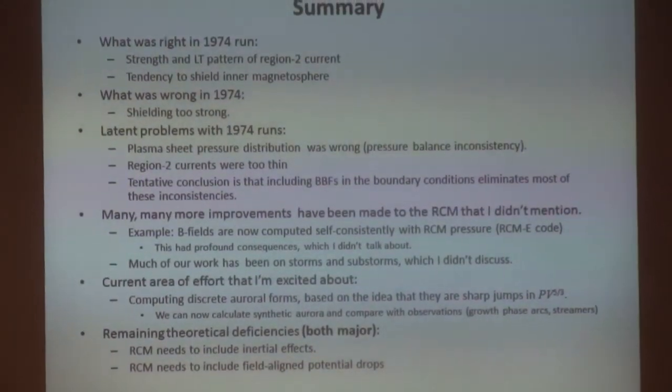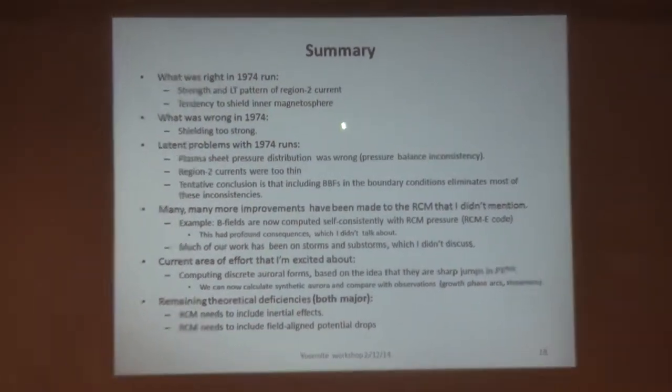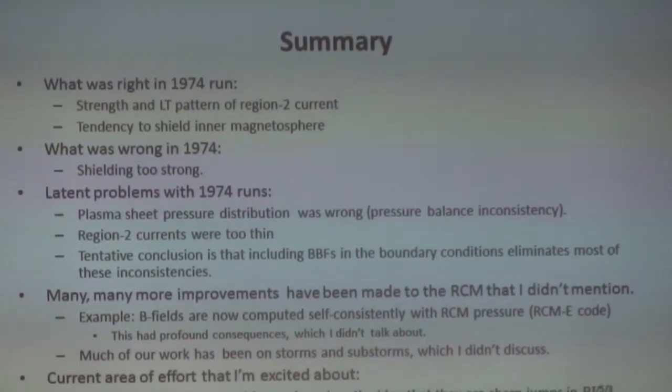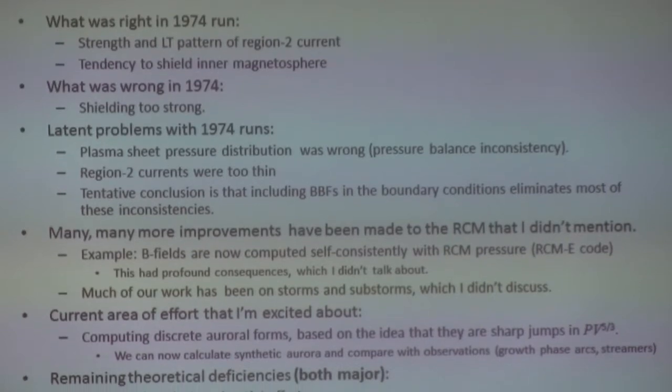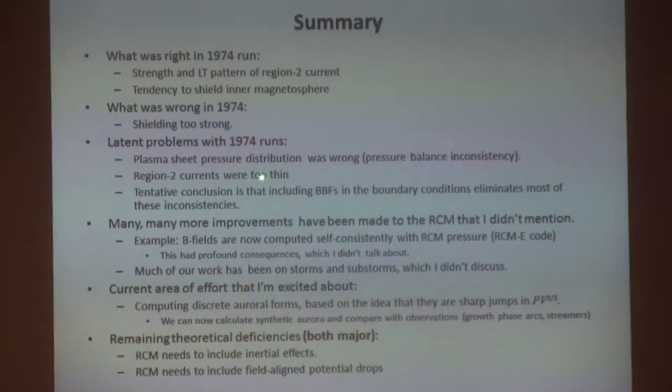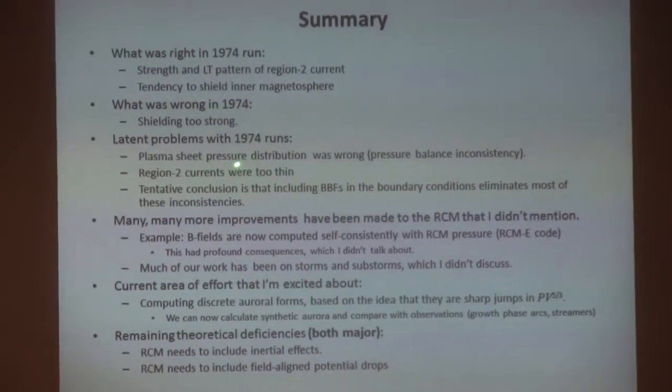The summary: what was right in the 1974 runs — the Region 2 current basic pattern was right, the shielding tendency was right. What was clearly wrong: the shielding was said to be stronger than it really is. We had these two latent problems that came up shortly after 1974 — the pressure balance inconsistency and the Region 2 current thickness — which we struggled with for many years. But we now think we may have a solution to both by including BBFs. Many improvements have been made to the RCM that I didn't mention because I just selected these topics.